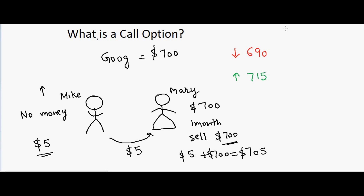For Mike, if the stock goes to $690, he'll say 'it's already at $690, why would I purchase it at $700?' So Mike won't make any purchase. This is an important thing to remember: a call is an option, not an obligation — he doesn't have to buy at $700.